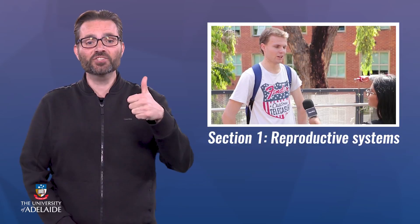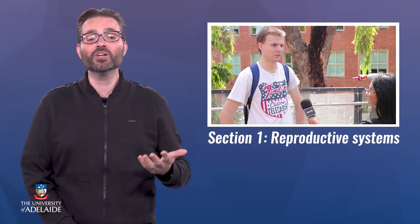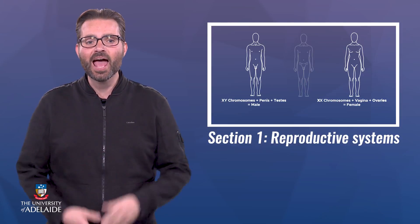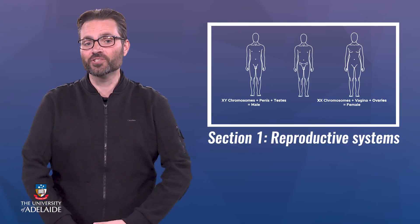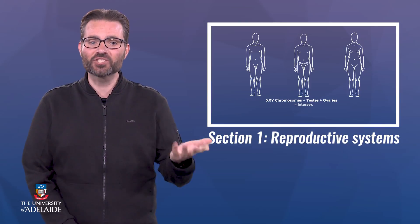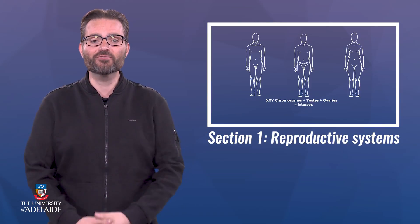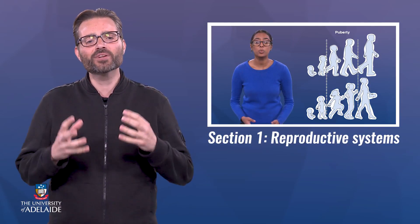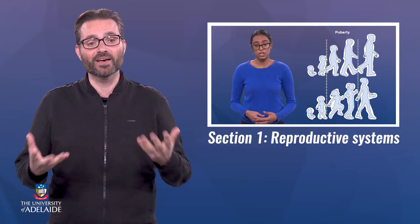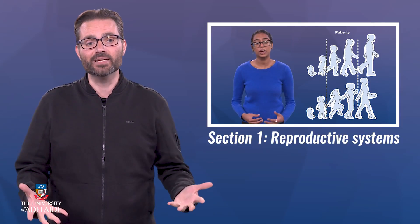SEX 101X is divided into five sections. In section one, you'll learn about reproductive organs, how biological sex is determined, sexuality and gender identity, and how reproductive systems function and develop during puberty.